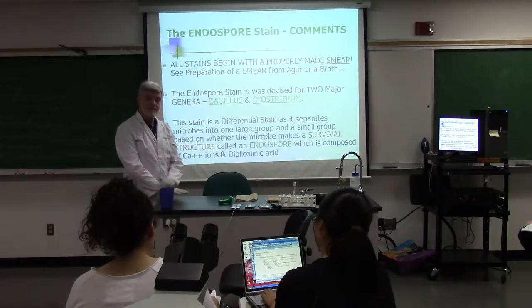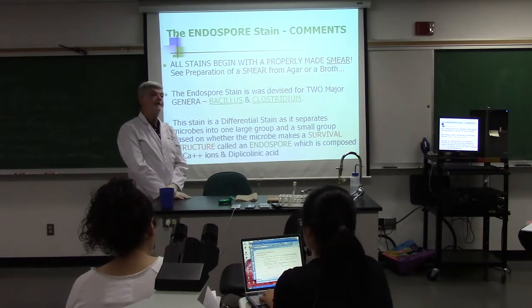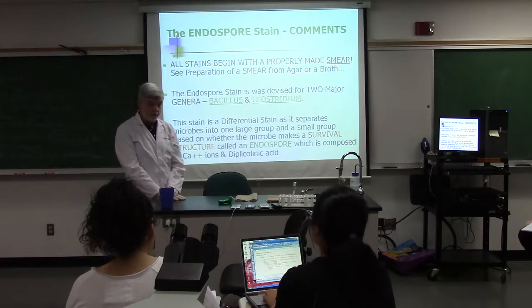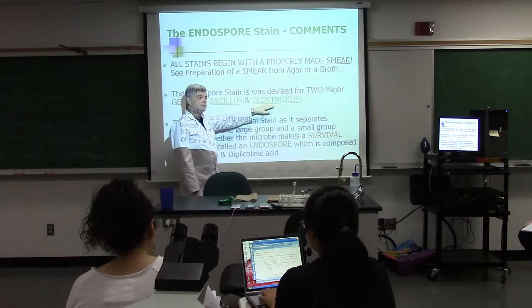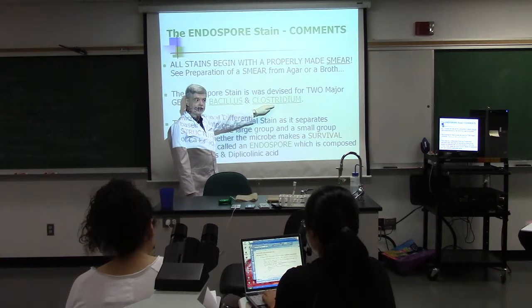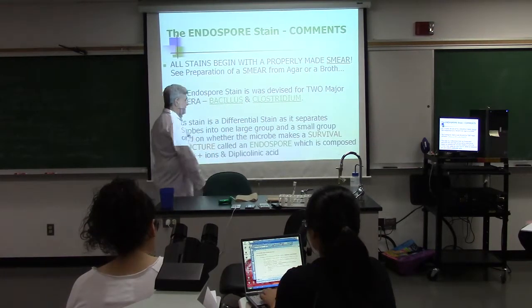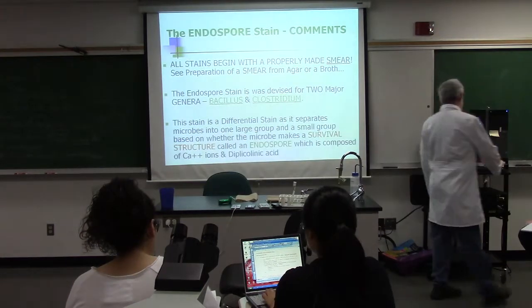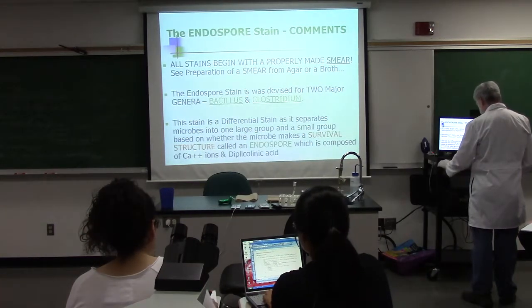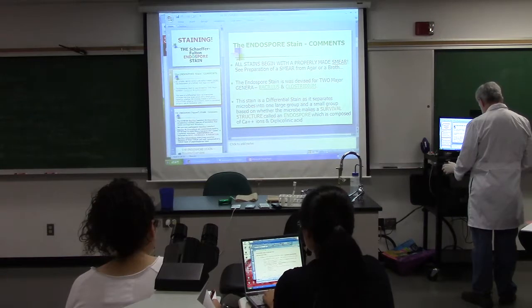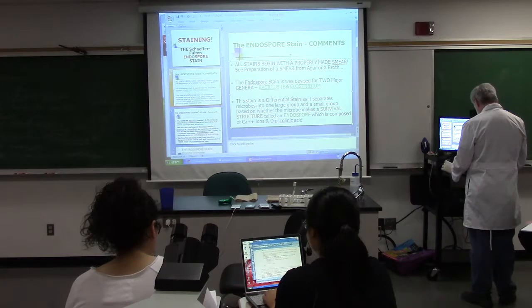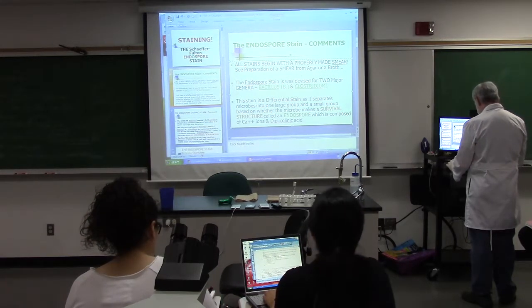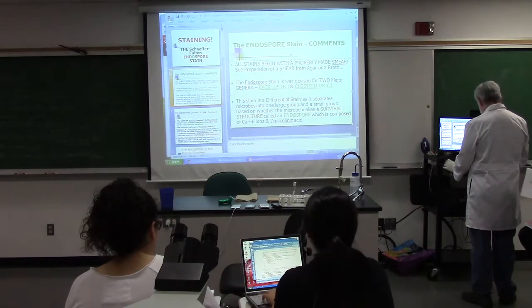The endospore sits and waits until germination conditions are optimum — the right temperature, wetness, and food. Then it germinates: one cell makes one endospore that germinates into one cell. So it is not reproduction. If the vegetative cell is aerobic, that is Bacillus. The genus that makes endospores anaerobically is Clostridium. Bacillus is abbreviated capital B period; Clostridium is abbreviated capital C, lowercase l, period.